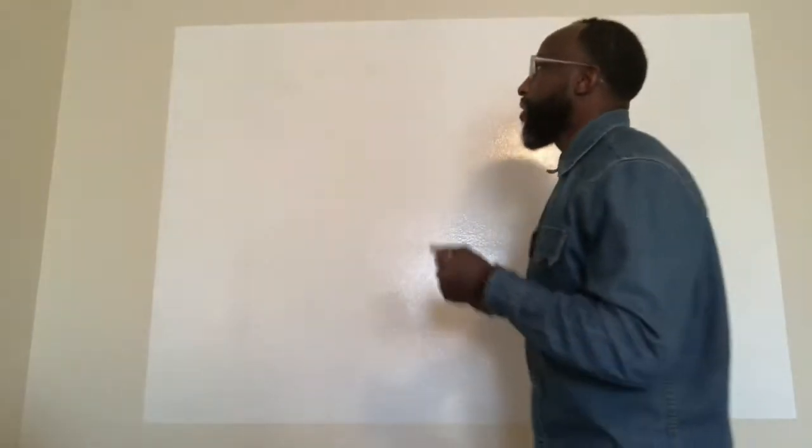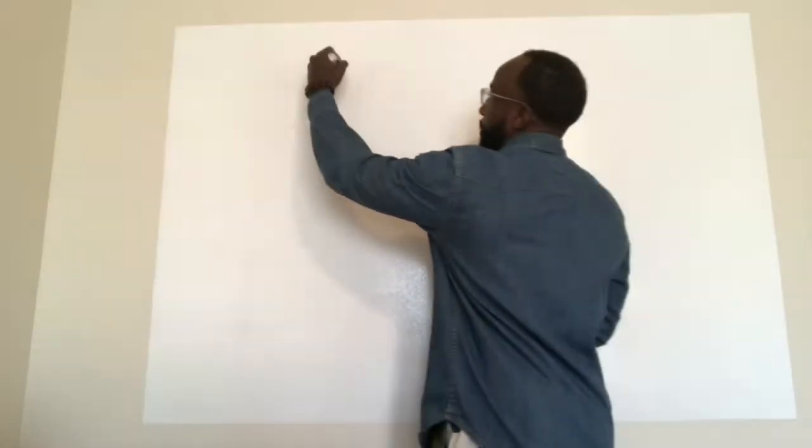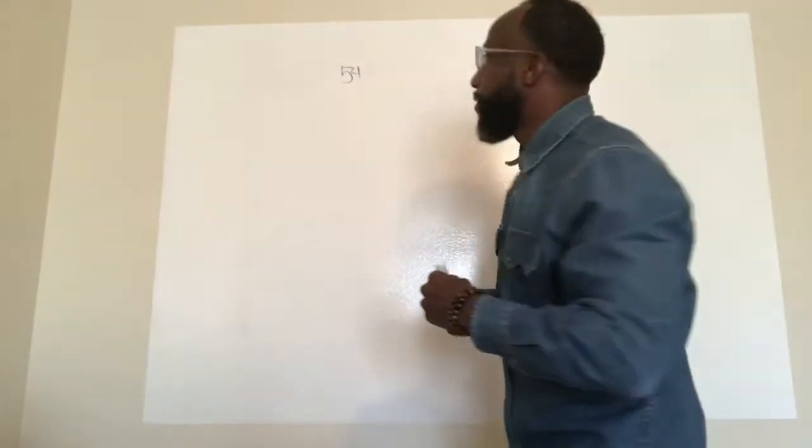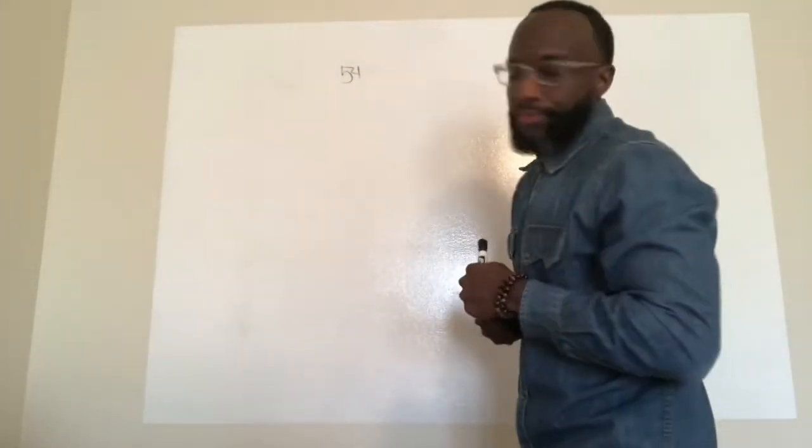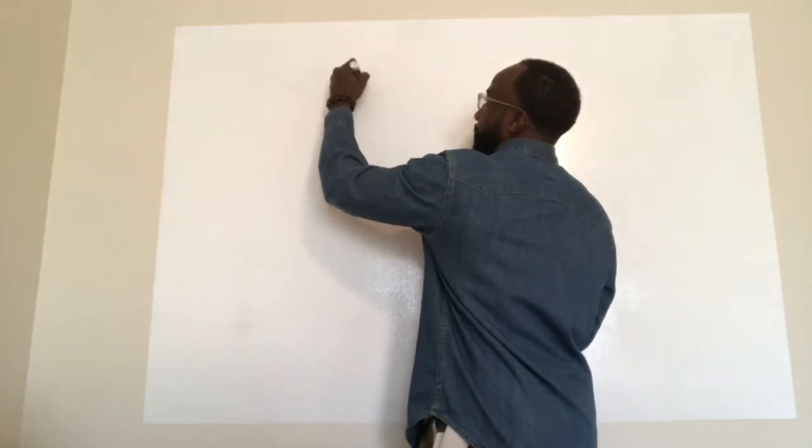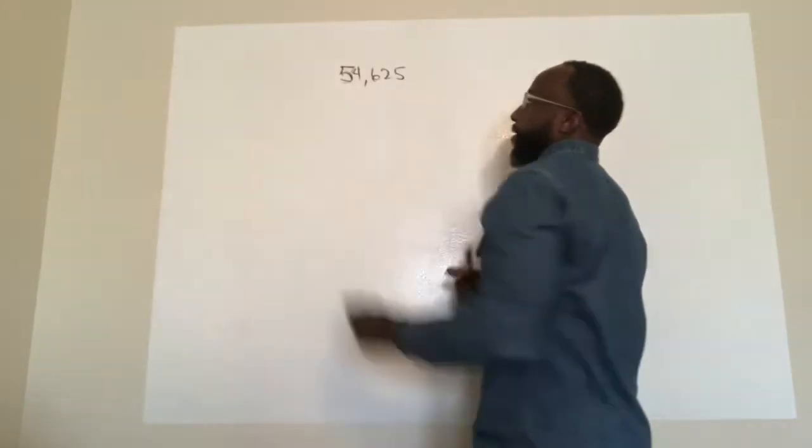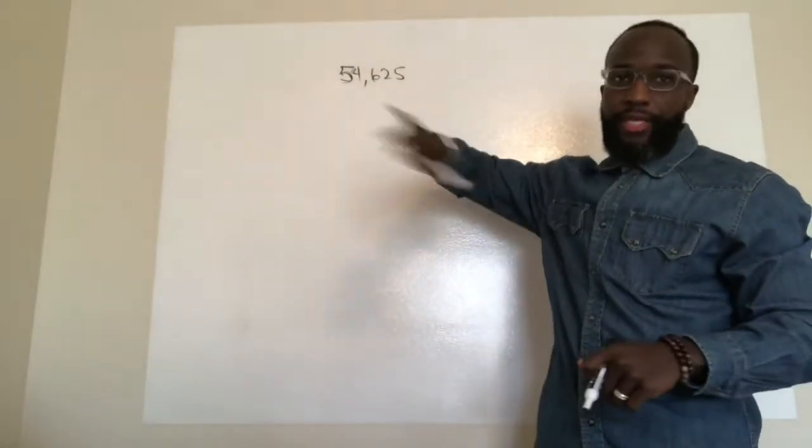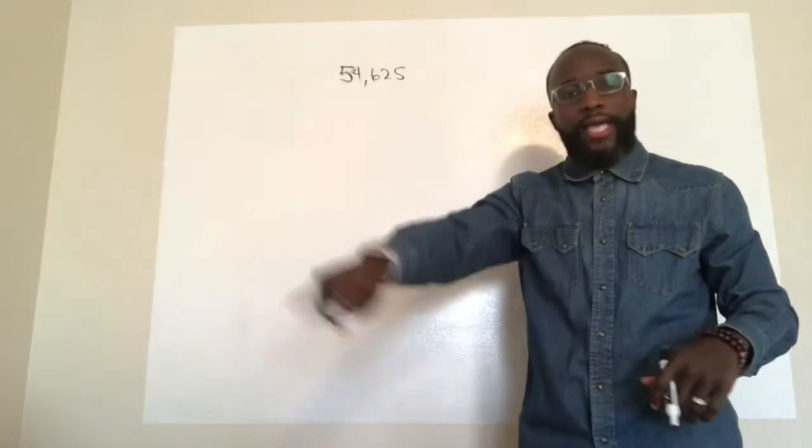So say for instance, I make, my gross income is $54,000. Is that a good marker? $54,000. I make $54,625 a year. Now that's my gross income, that's prior to taxes, before taxes.